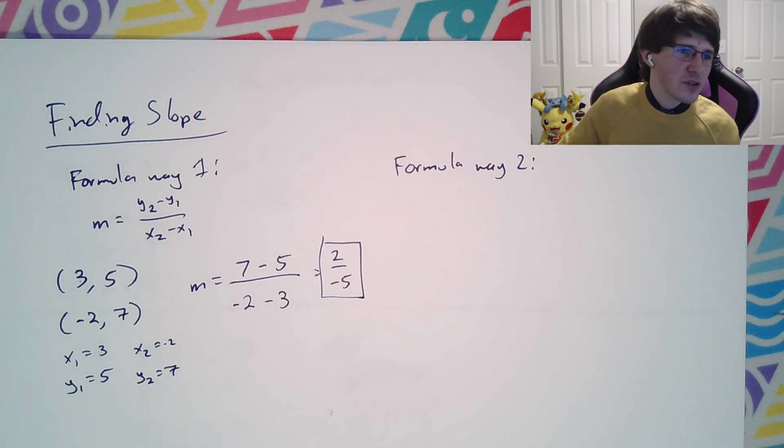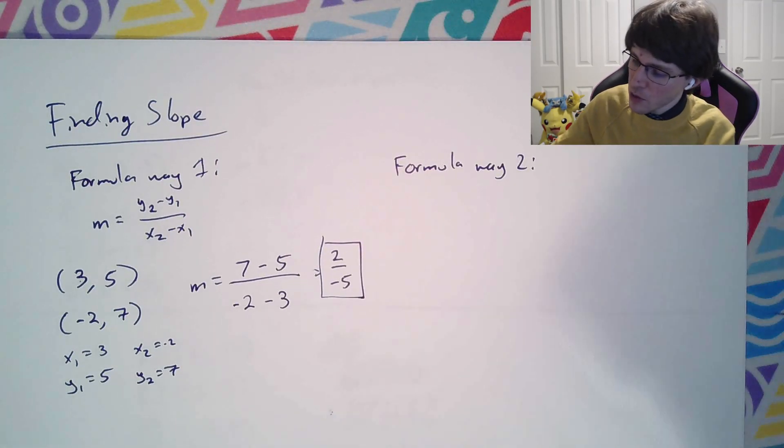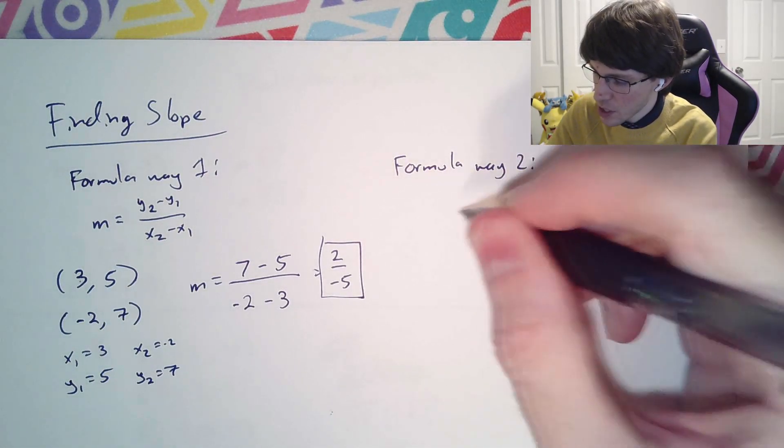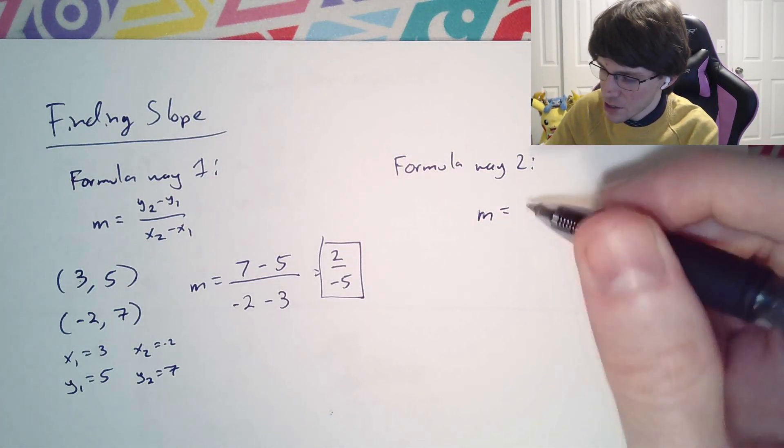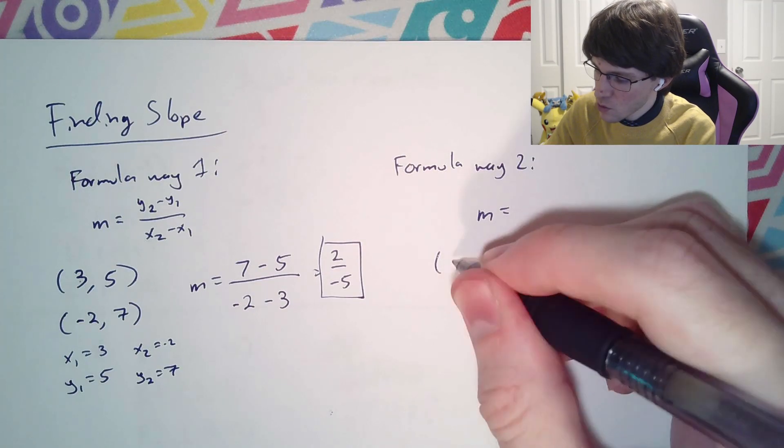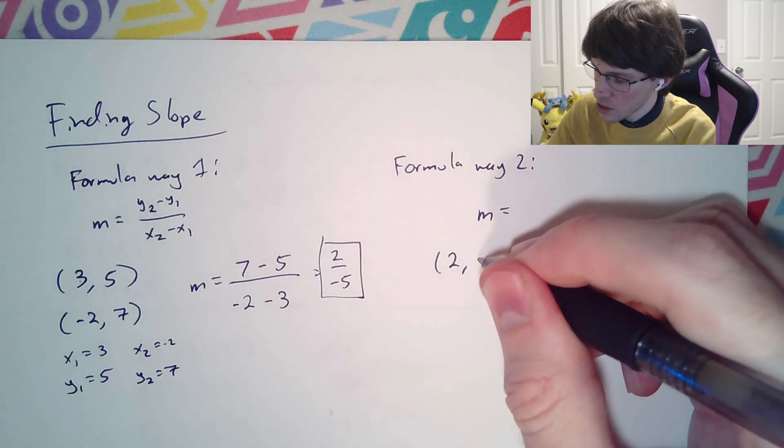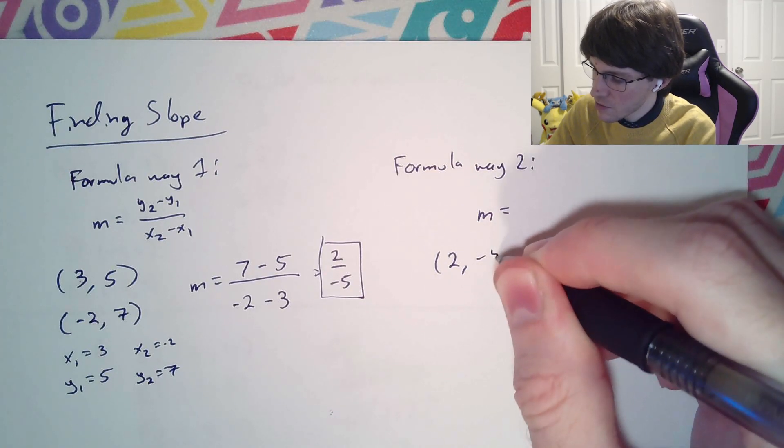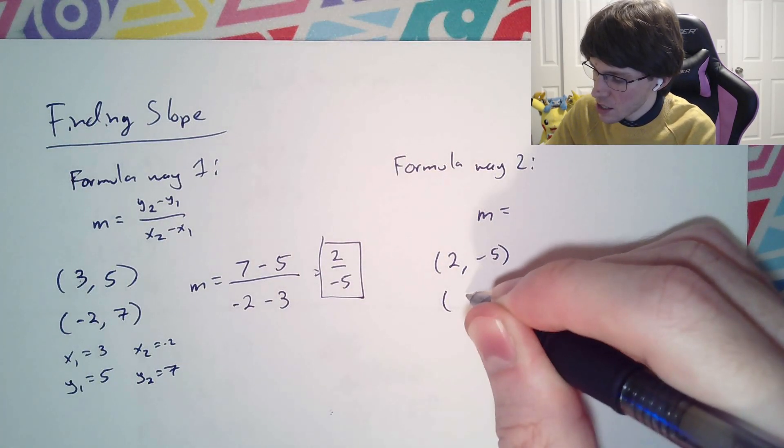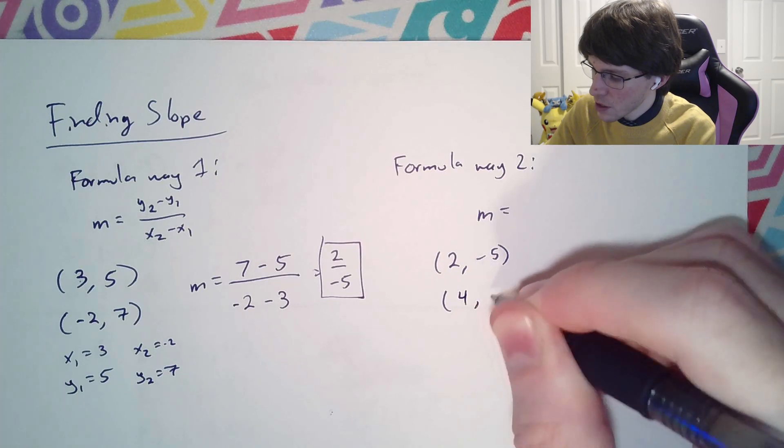However, I like to say that there's a formula way 2. Let's go ahead and switch up the numbers. I think it's great to try to do them in your head when possible. So let's say we had like 2, negative 5, and maybe 4, 7.